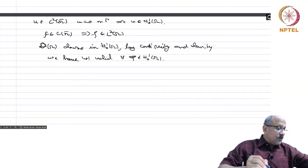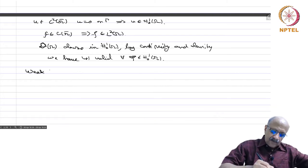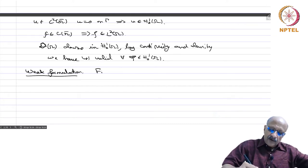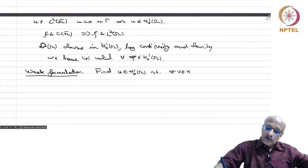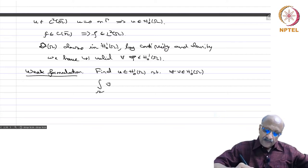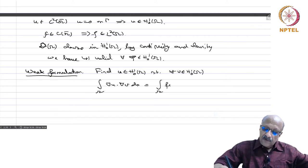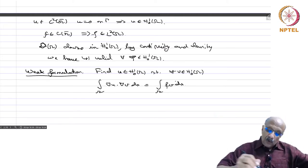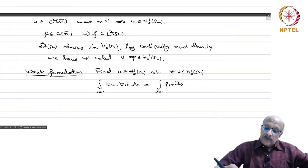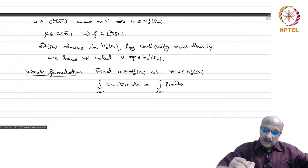We call this the weak formulation: find u in H^1_0(omega) such that for every v in H^1_0(omega), the integral on omega of grad u dot grad v dx equals the integral on omega of f v dx. There is nothing about the second derivative here, even though the given differential equation is a second order equation, namely for the Laplace operator.